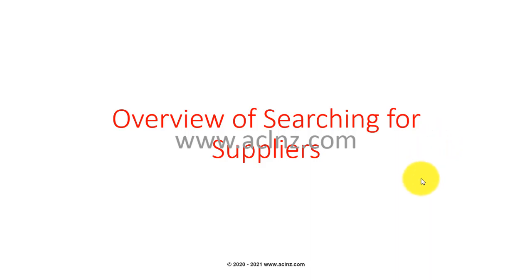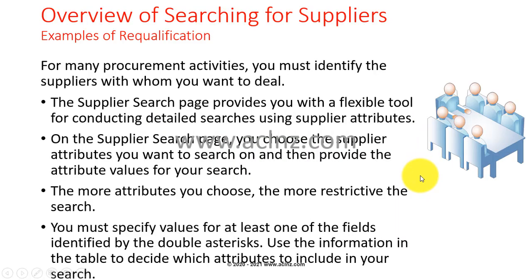Overview of searching for suppliers. For many procurement activities, you must identify the suppliers with whom you want to deal with. The supplier search page provides flexible tools for conducting detailed searches using supplier attributes. The supplier search includes basic criteria as well as advanced criteria using which you can perform the search.